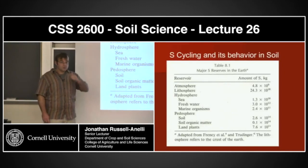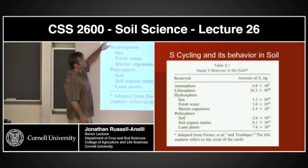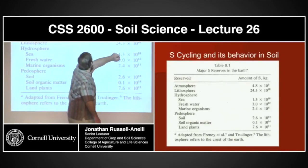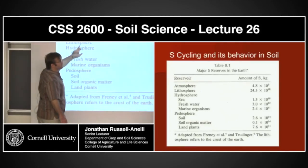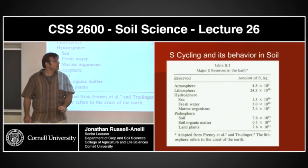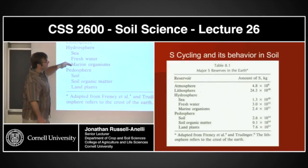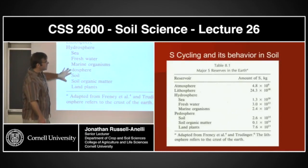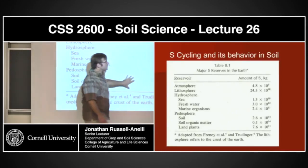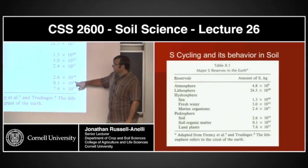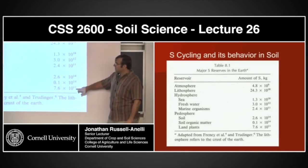Let's actually take a look at the pools. The atmospheric pool is actually rather small compared to all the other pools. The lithosphere tends to be the largest — most of the sulfur on our planet is in the rocks. The hydrosphere has some sulfur that's basically run off the land. The biosphere and the soil organisms also have a fairly large pool, as do the soil organic matter and land plants.